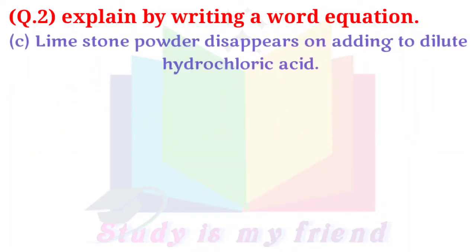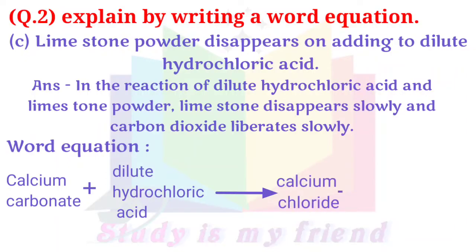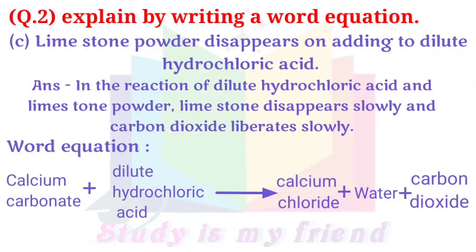C. Limestone powder disappears on adding to dilute hydrochloric acid. Answer: In the reaction of dilute hydrochloric acid and limestone powder, limestone disappears slowly and carbon dioxide is liberated slowly. Word equation: Calcium carbonate + Dilute hydrochloric acid → (Reaction) → Calcium chloride + Water + Carbon dioxide.